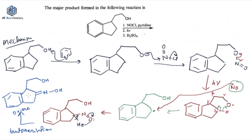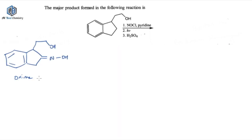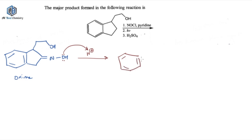Now let's see what this oxime will do in the third step. This was the oxime formed up to the second step. Now you are treating it with H₂SO₄ — giving acid to it — so H⁺ will be there. This oxygen containing the lone pair will abstract H⁺ and you will get an OH₂ group, which is a very good leaving group and will leave the reaction in the next step. Now in this particular step your ring expansion will be done.